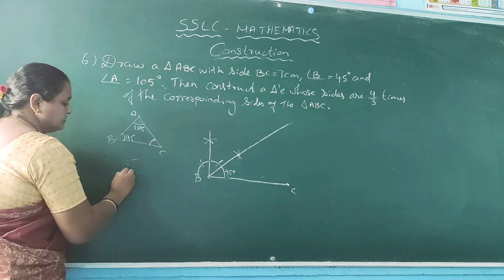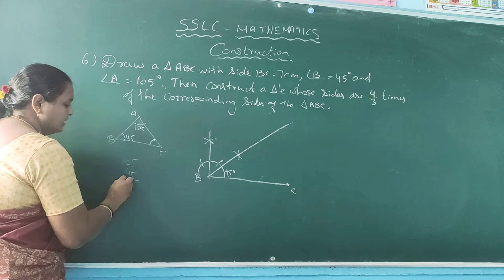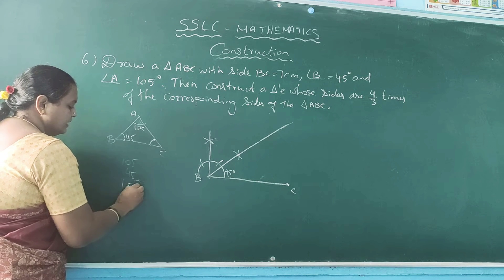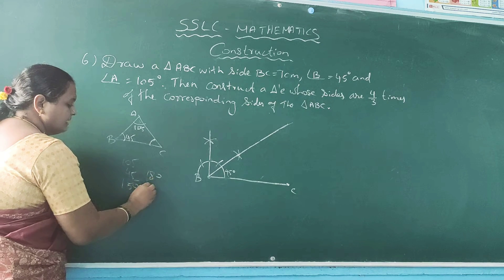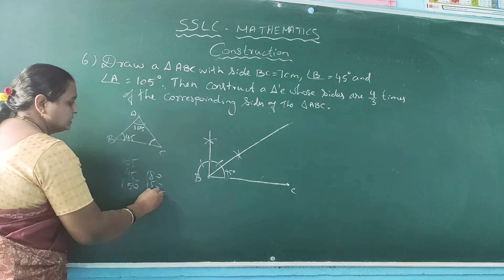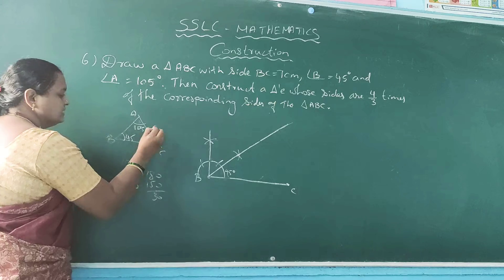If you add 105 plus 45, you will get 150. So from 180 degree subtract 150, the remaining angle is nothing but 30 degree. This is 30 degree.